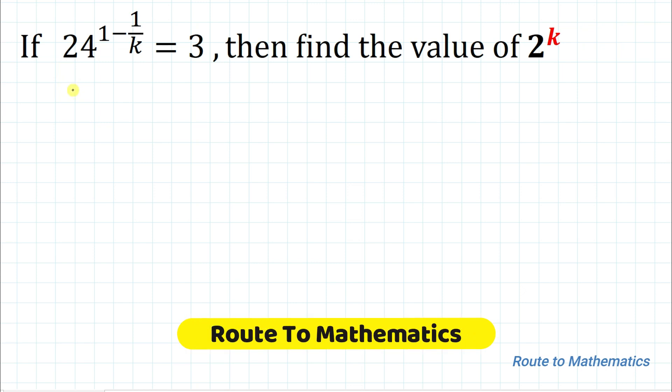Hello everyone, welcome to Route to Mathematics. In this video, we're going to solve this question. We have given that if 24 to the power 1 minus 1 by k equals to 3, then find the value of 2 to the power k. Here we have given a simple equation and we are asked to find the value of 2 to the power k. In this question, I am using some simple exponential rules to find out the value of 2 to the power k.